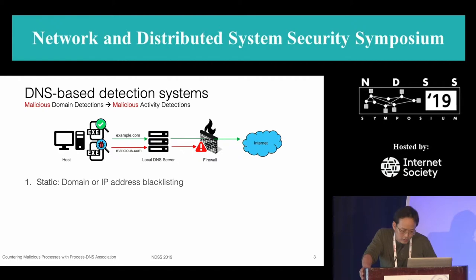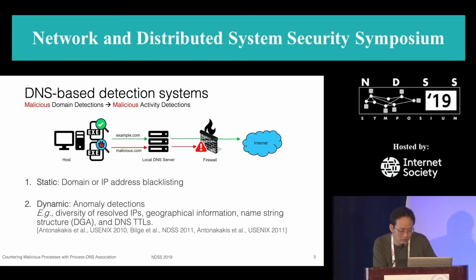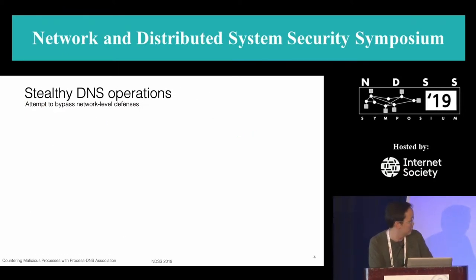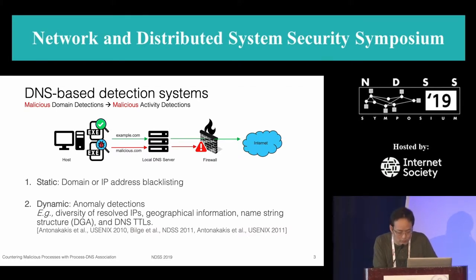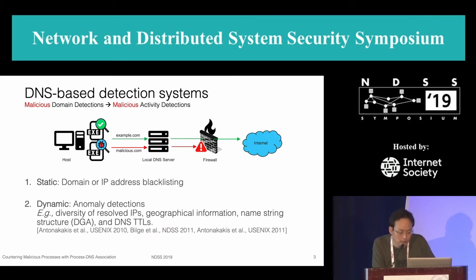There are two different approaches to examine and filter suspicious DNS traffic. The first is based on simple and straightforward blacklisting. The second is more dynamic DNS detection to counter advanced attackers who register new domains in a transient manner in an effort to evade detection. Dynamic DNS defense refers to the meta-information of the DNS such as IP, geolocations, name string structures, and TTLs.